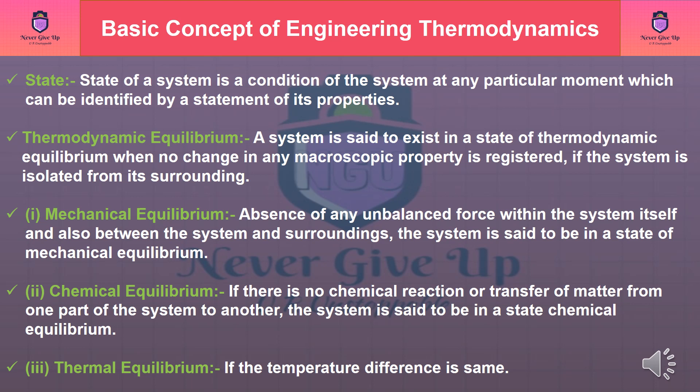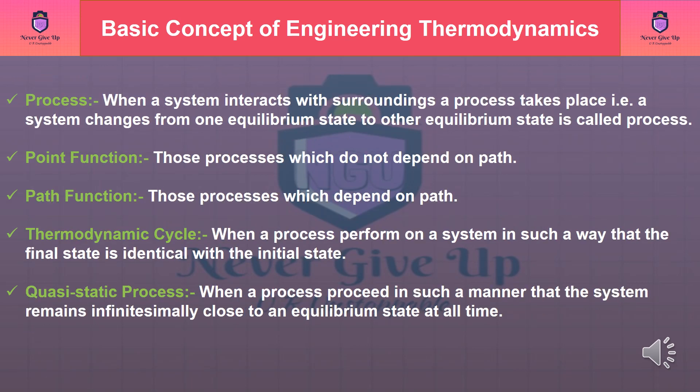Thermal equilibrium: If the temperature difference is the same throughout the system. Process: When a system interacts with its surroundings, a process takes place; that is, a system changes from one equilibrium state to another equilibrium state. Point function: Those properties which do not depend on path. Path function: Those properties which depend on path. Thermodynamic cycle: When a process is performed on a system in such a way that the final state is identical with the initial state. Quasi-static process: When a process proceeds in such a manner that the system remains infinitesimally close to an equilibrium state at all times.